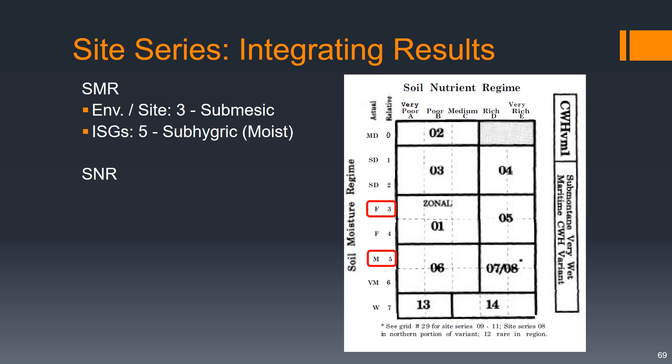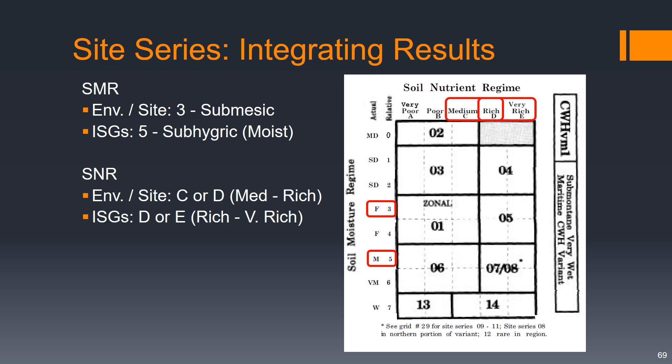For soil nutrient regime, our environmental analysis gave us C medium or D rich. And our plant indicator species groups gave us D or E, rich or very rich.